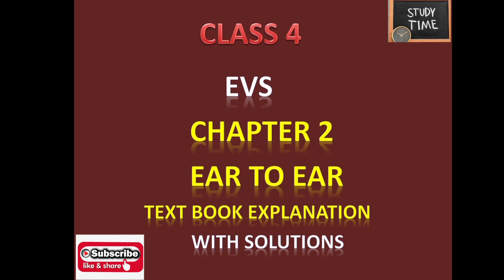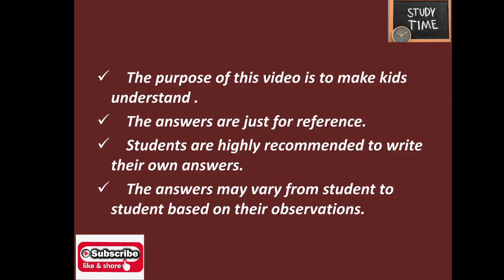Hello everyone, welcome to Study Time. In this video we are going to see Class 4 EVS Chapter 2, 'Year to Year'. I'm going to explain this chapter and we'll also be discussing textbook solutions. The purpose of this video is to make kids understand — the answers are just for reference only. Students are highly recommended to write their own answers, as they may vary based on observations. In this chapter we are going to discuss different types of animals and their ears, their skin patterns, and hairs on their body.